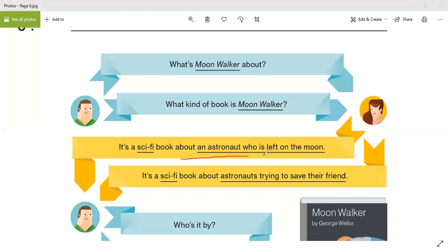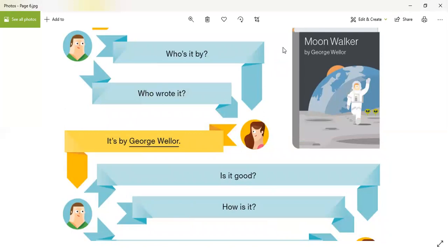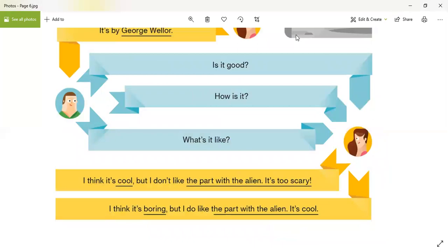Okay. And what kind of book is Moonwalker? A sci-fi book about astronauts who slept on the moon. Yeah. And who's it by? Who wrote this book? George Miller. Good. And is it good? Yes, it's good.